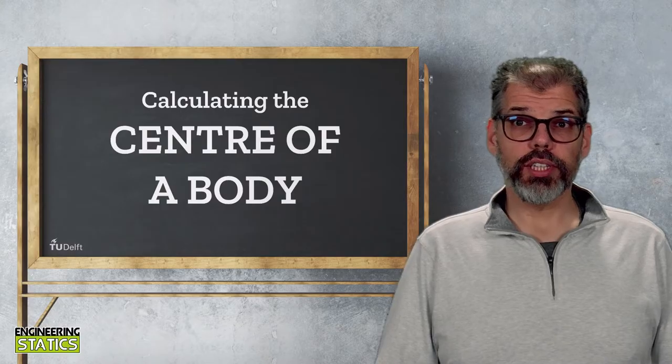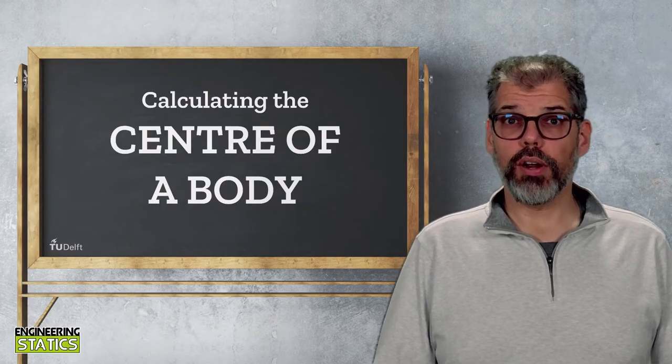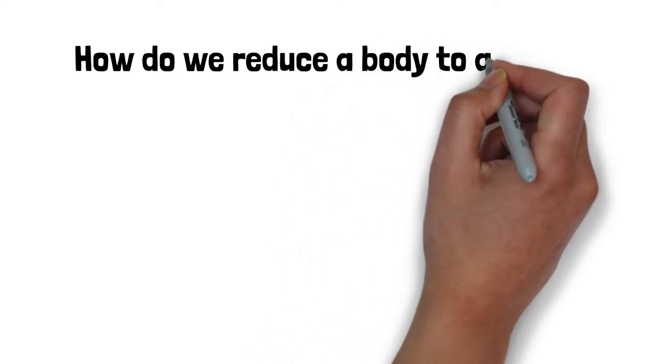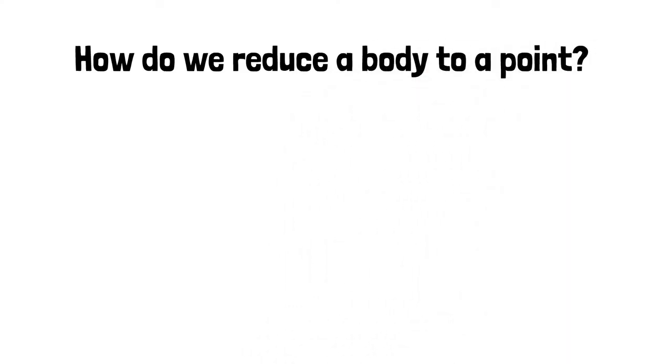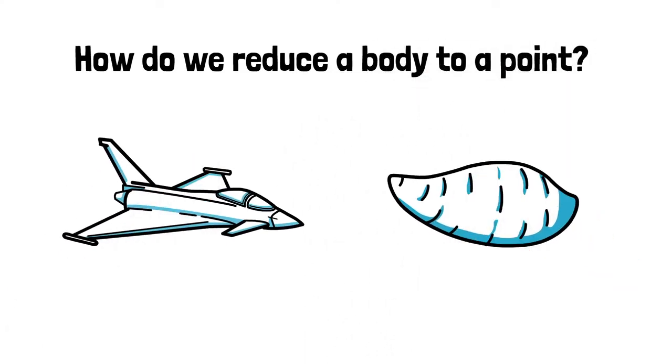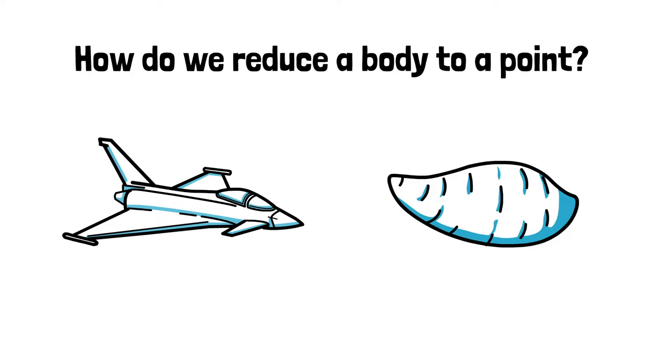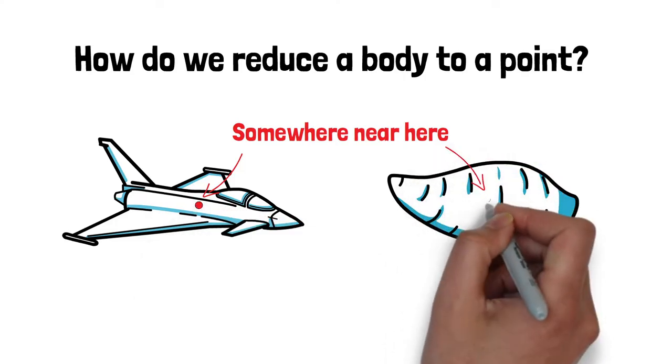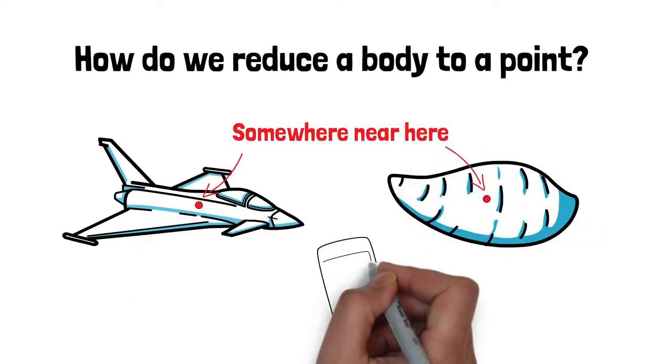But what is the significance of this single point and how does it affect our analysis? In other words, how do we take a body we want to analyze, whether it is an aircraft or an engineering potato, and reduce it to a single point? You might have some qualitative idea of where it should be, but we want to come up with a robust and quantitative method to locate that point.